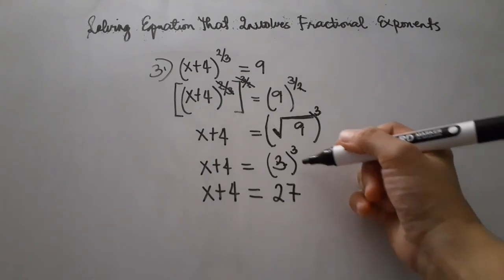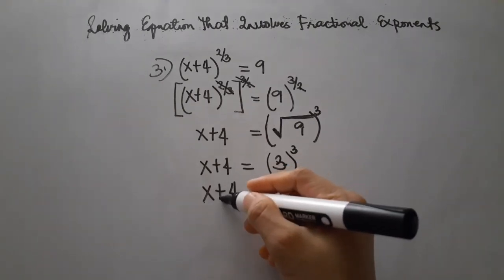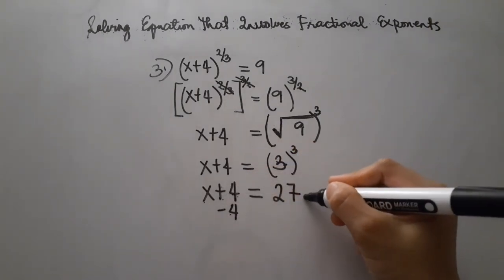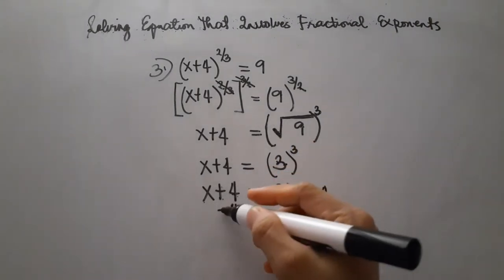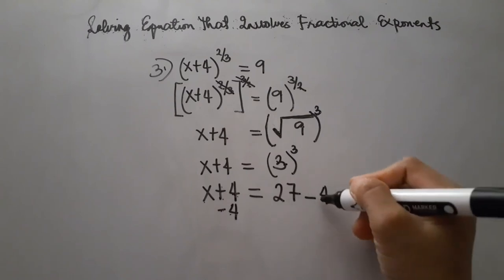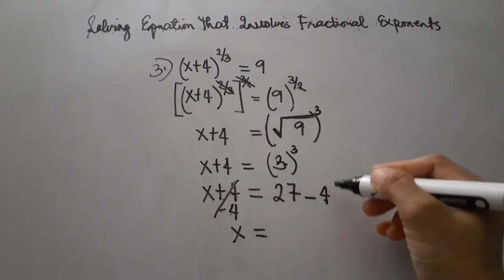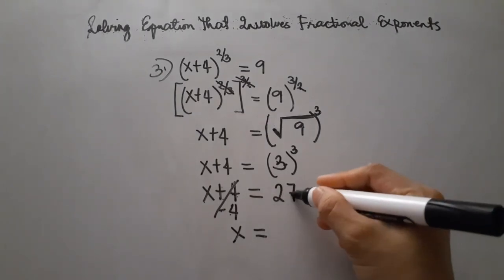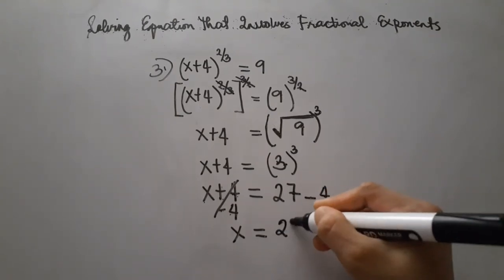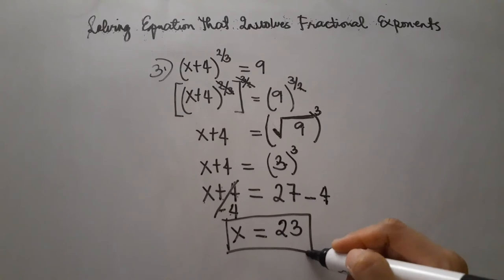The square root of 9 is 3. So we have x plus 4 equals 3 raised to the power of 3. Solving: 3 times 3 is 9, times 3 is 27. So x plus 4 equals 27. To isolate x, we subtract 4 from both sides. Therefore, x equals 27 minus 4, which equals 23.